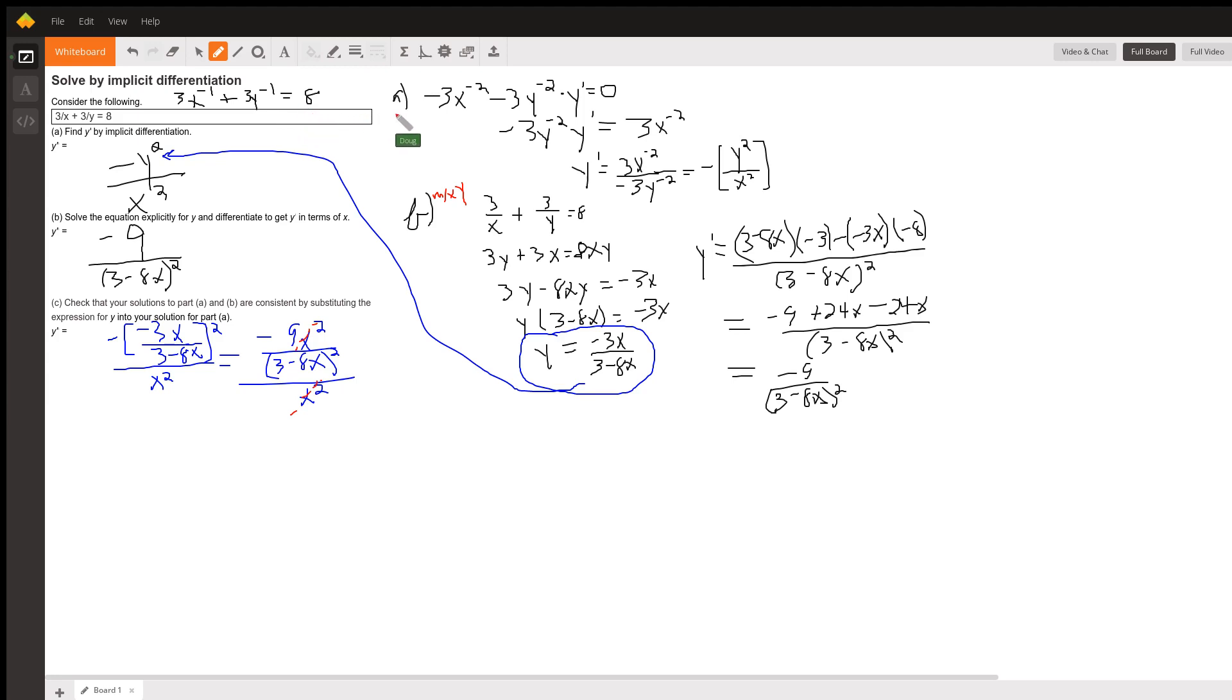Over here is part a where I've applied the power rule to each term. Multiply the exponent times the coefficient. So that's minus 3. Reduce the exponent by 1, x to the minus 2. Same thing over here except I have to multiply by y prime where I'm applying the chain rule.